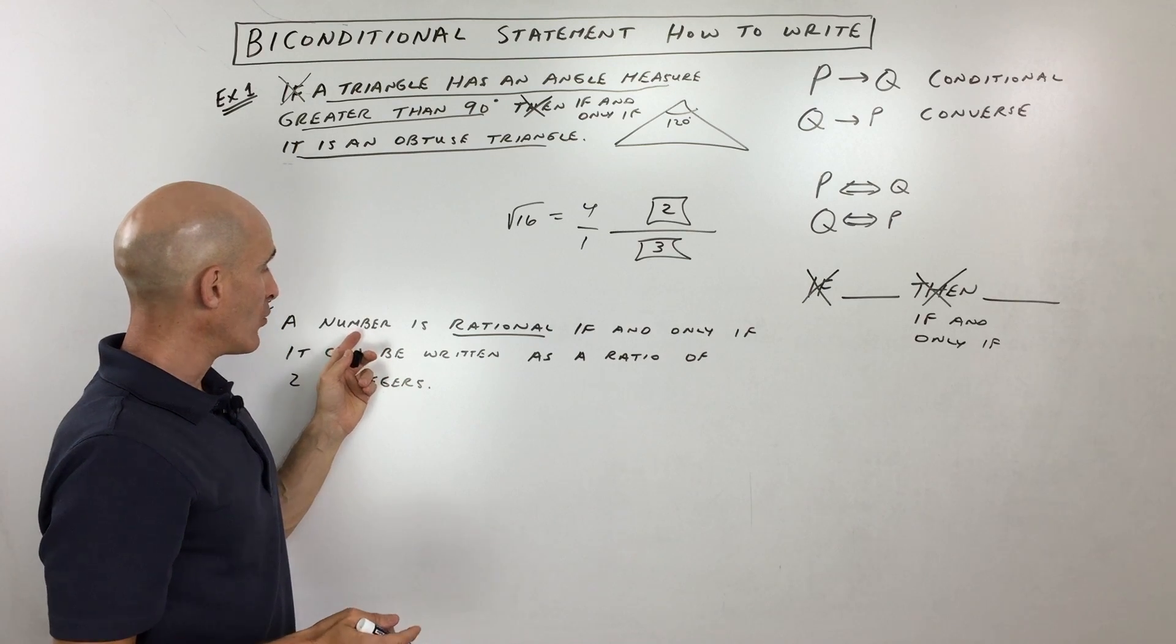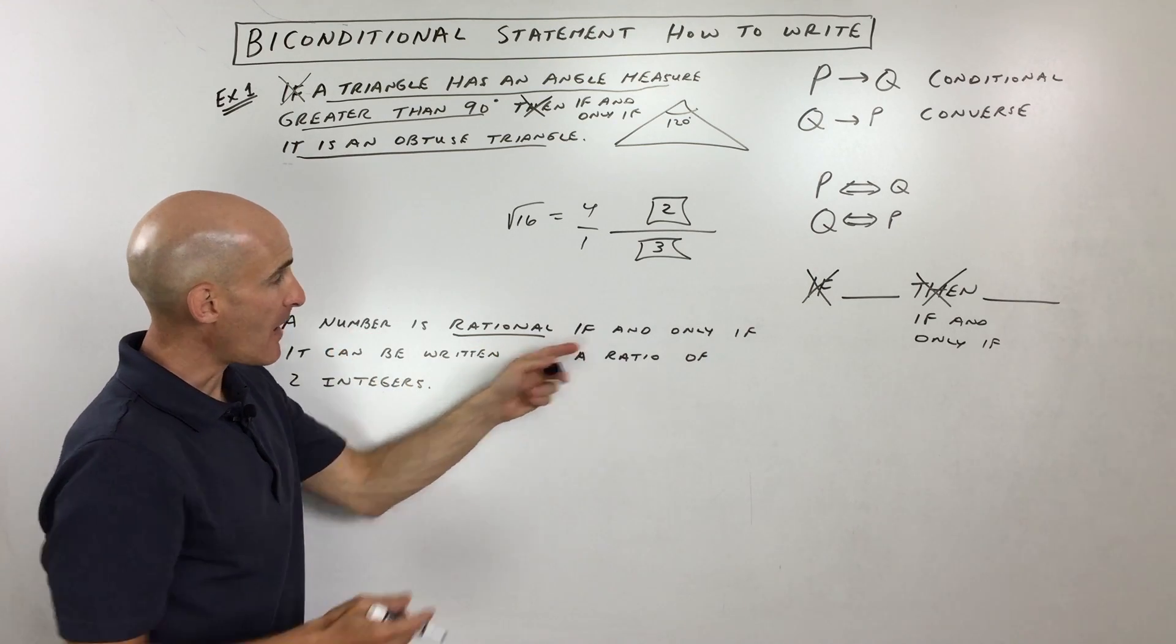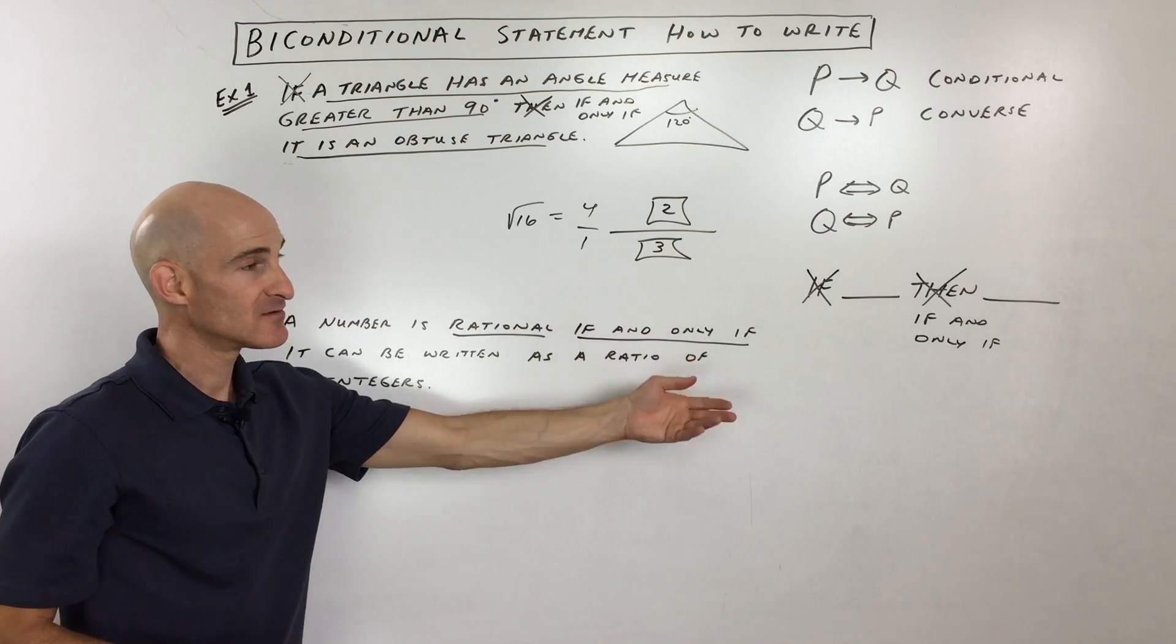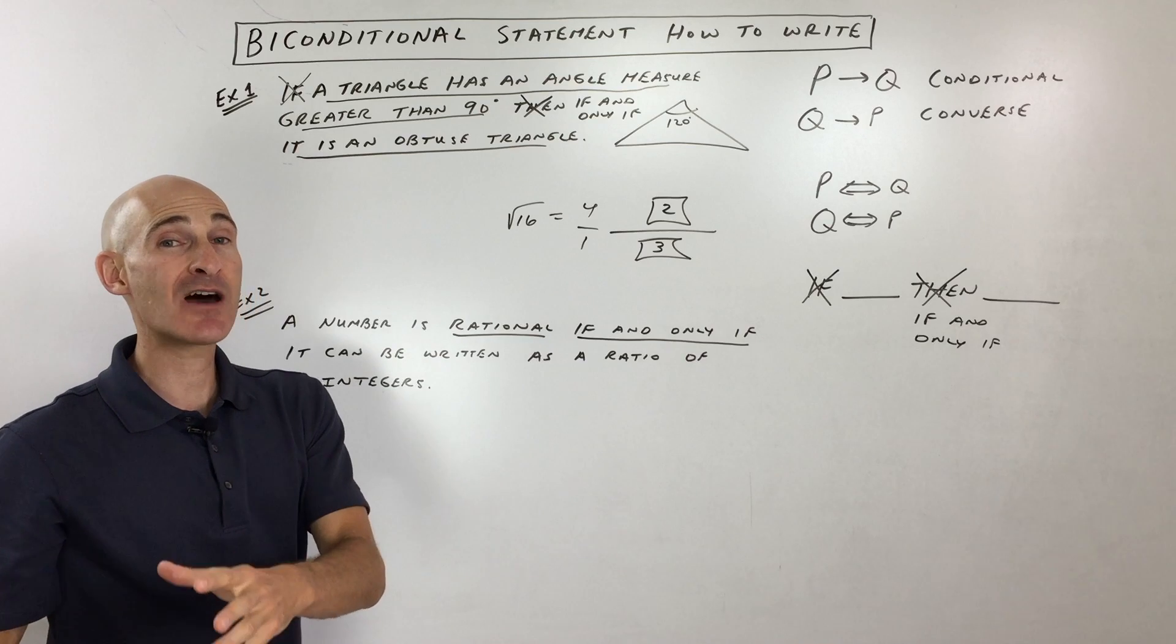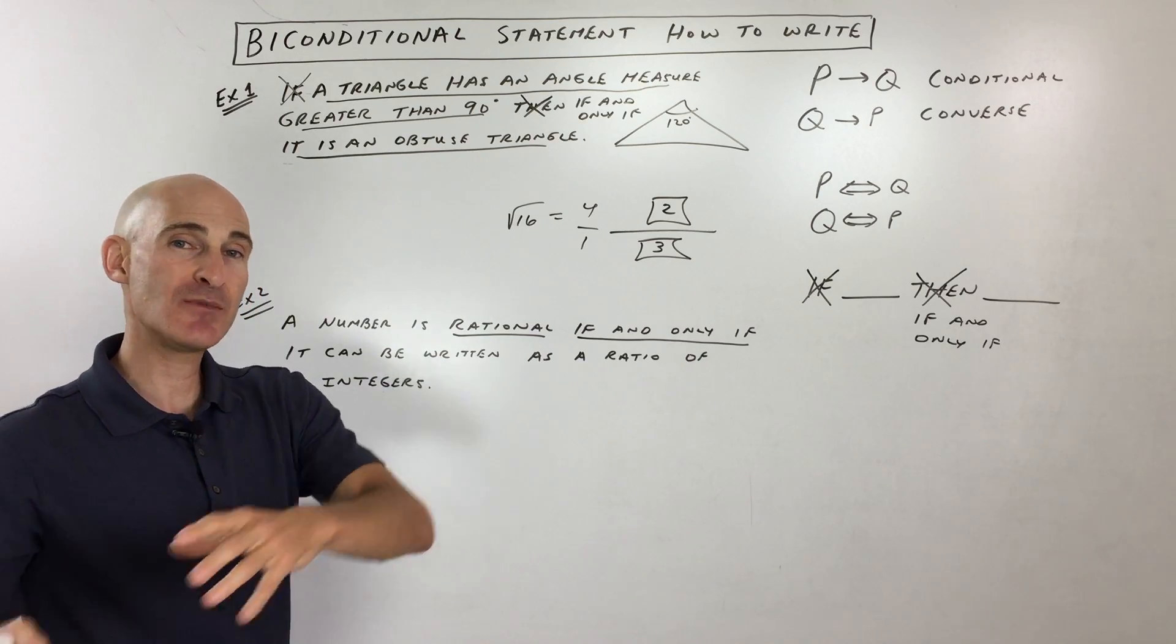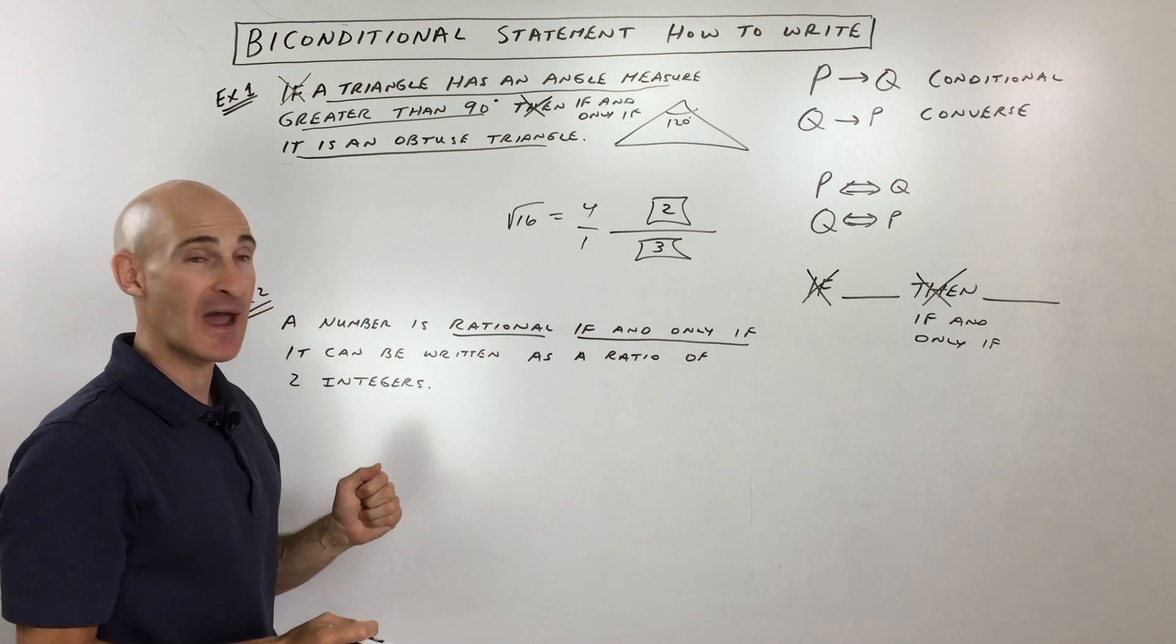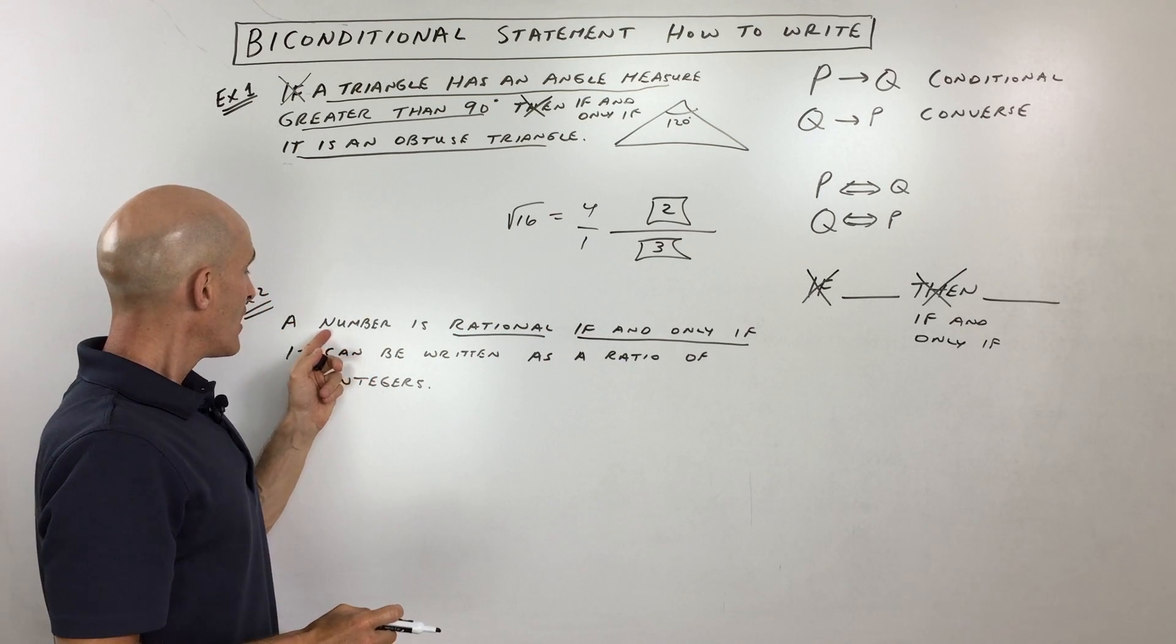Let's read this again. They're telling us it's a biconditional statement. See this if and only if? That tells us that it's true forwards and in reverse. So, let's break it down into its original conditional statement and its original converse statement before we put it together into this biconditional.